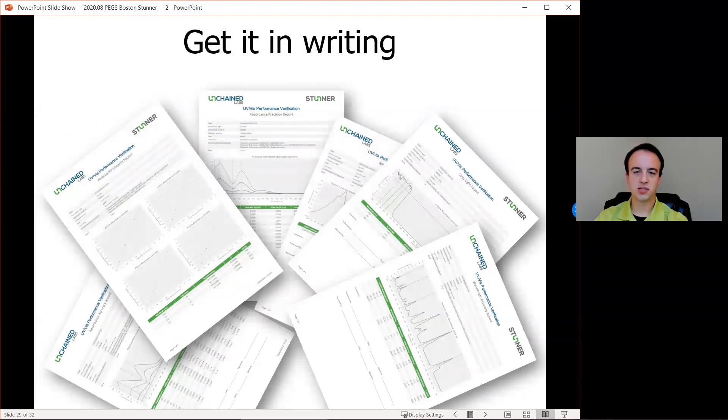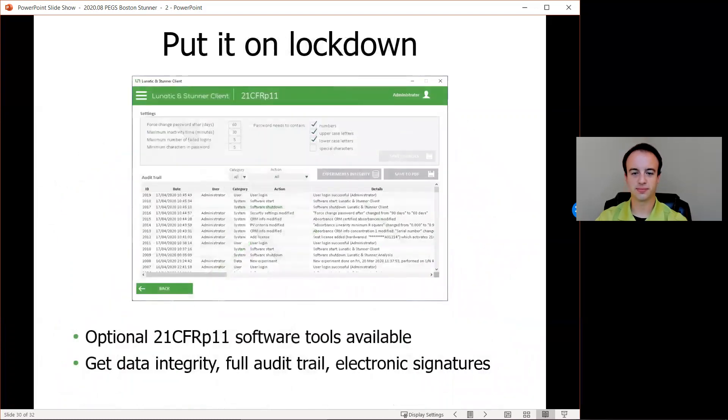So Stunner also reports these detailed results for quick review and record keeping after each test. And you can also put the software on lockdown with the 21 CFR Part 11 software tools available, which means Stunner is ready for anywhere from research and development to manufacturing and QC. You can unify your entire biologics workflow with the best and easiest to use UV-Vis spectrometers available.